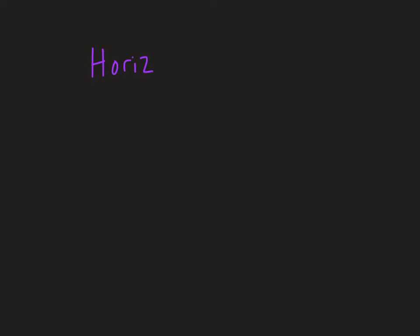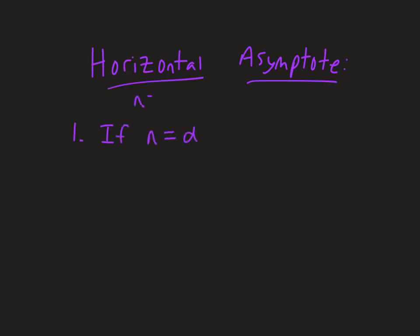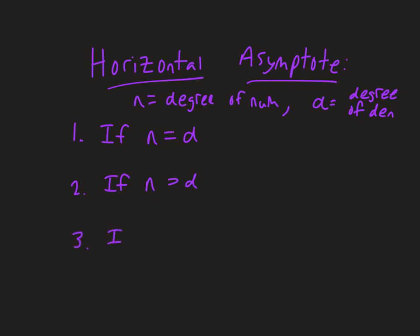Here's the summary for horizontal asymptotes, which ties back to end behavior. Let N be the degree of the numerator and D be the degree of the denominator. There are only three options: the degrees are equal, the numerator has a higher degree, or the denominator has a higher degree. When the degrees are equal, use the ratio of the leading coefficients.